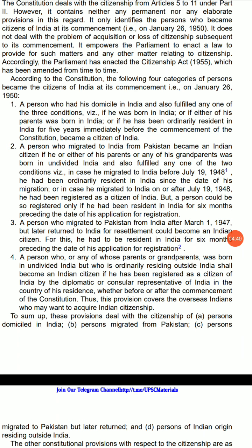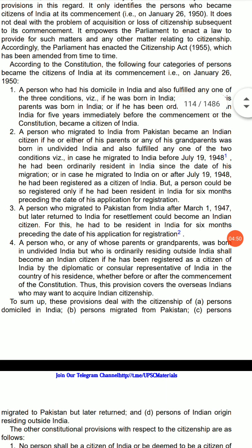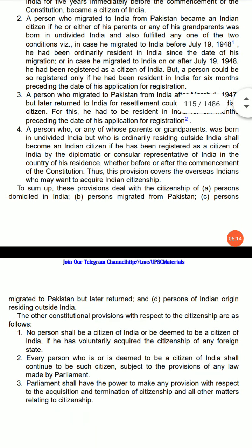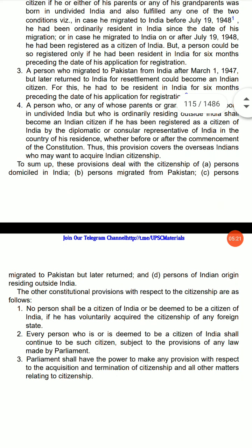Third, a person who migrated to Pakistan from India after March 1, 1947, but later returned to India for settlement, could become an Indian citizen. For this, he had to be resident in India for six months preceding the date of application for registration. Fourth, a person who or any of his parents or grandparents were born in undivided India but who was ordinarily residing outside India shall become an Indian citizen if registered as a citizen of India by a diplomatic or consular representative of India in the country of his residence, whether before or after the commencement of the constitution. This provision covers overseas Indians who may want to acquire Indian citizenship.